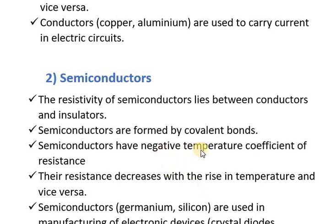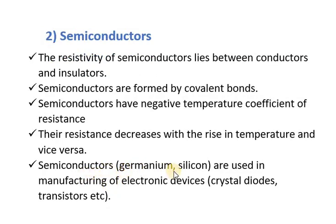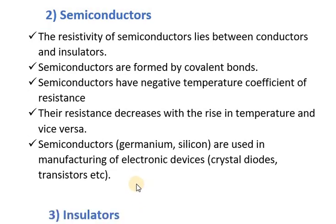In semiconductors, because of the negative temperature coefficient of resistance, their resistance decreases with the rise in temperature and vice versa — if temperature increases, resistance decreases. Semiconductors like germanium and silicon are used in the manufacturing of electronic devices like crystal diodes, transistors, LEDs, and many other diodes.